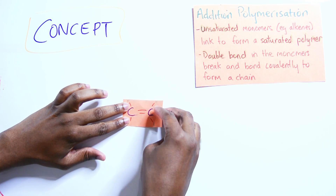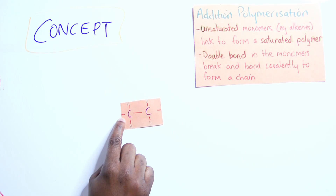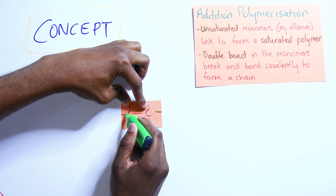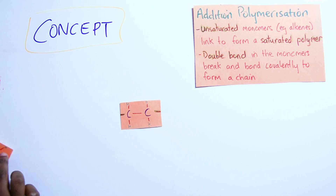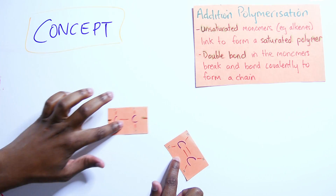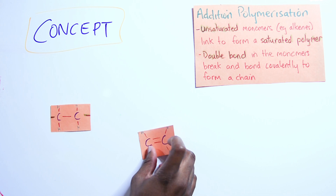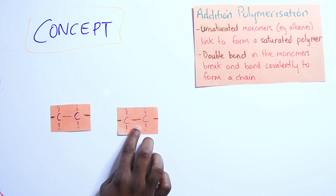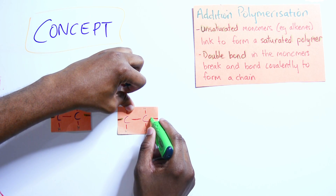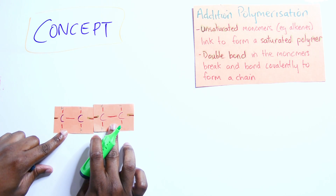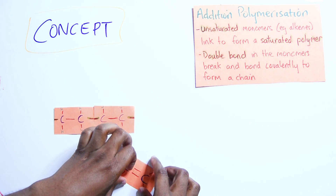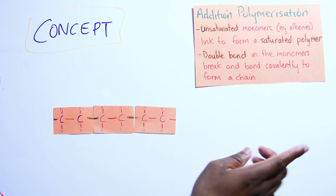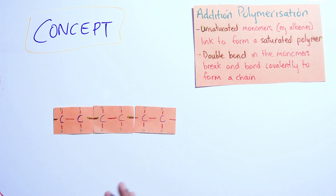Think of each bond as a handshake. When one of the double bonds breaks, each carbon now has a free hand to grab onto somebody. When another ethene molecule comes along and also breaks one of its double bonds, they join up — and then another comes along, and another, joining up over and over.